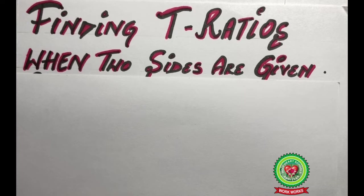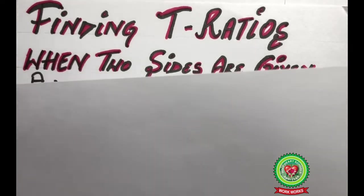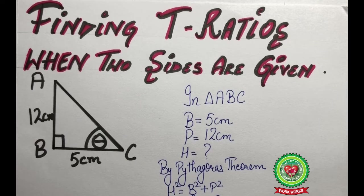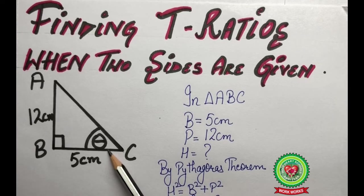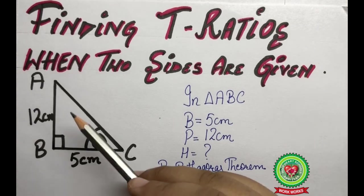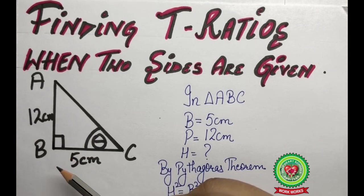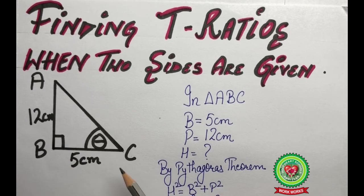Then we are going to find all the six trig ratios from there. For example, we have a problem in which triangle ABC is a right angled triangle at B, the reference angle theta is given at vertex C, the length of AB is 12 centimeters and the length of BC is 5 centimeters. Our first step will be to identify base, perpendicular, and the hypotenuse.